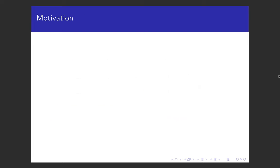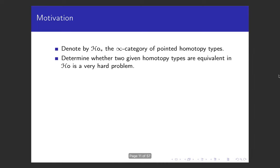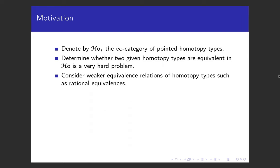Denoted by HO*, the infinity category of pointed homotopy types can be modeled by the topological category of pointed CW complexes. It is a hard problem to determine whether two given homotopy types are weakly equivalent, because of the difficulty of computations of homotopy groups. We could, however, first consider weaker equivalence relations between them.